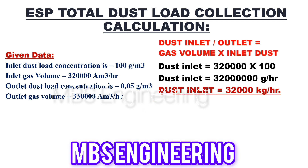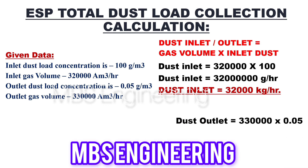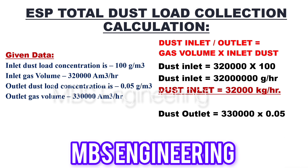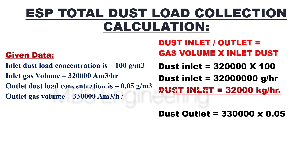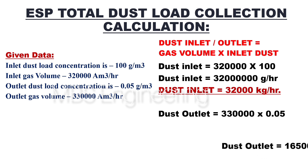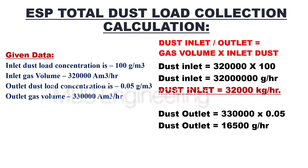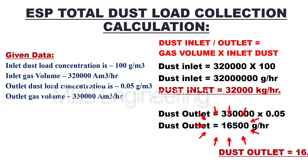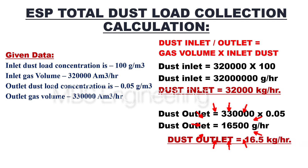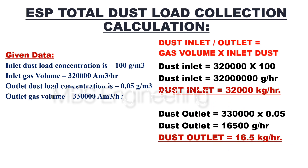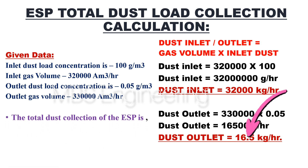Gas outlet dust concentration equals 3,30,000 multiplied by 0.05. The dust outlet concentration is 16,500 grams per hour. To convert into kilograms per hour, 16,500 is divided by 1,000. The obtained outlet dust concentration value is 16.5 kilograms per hour.